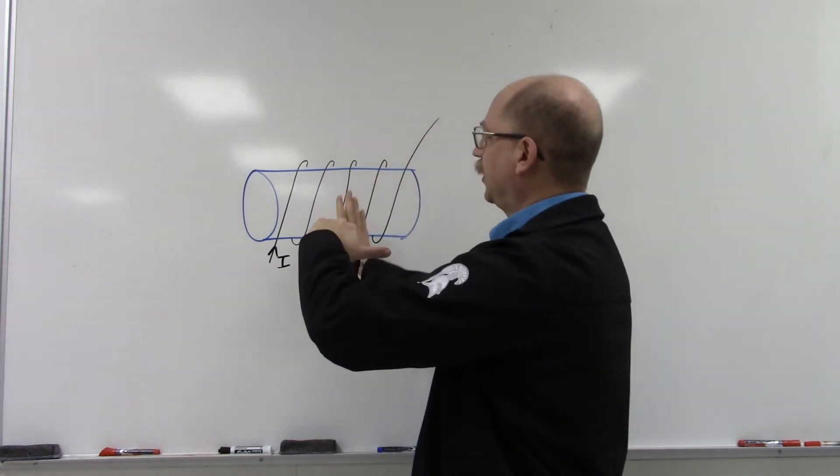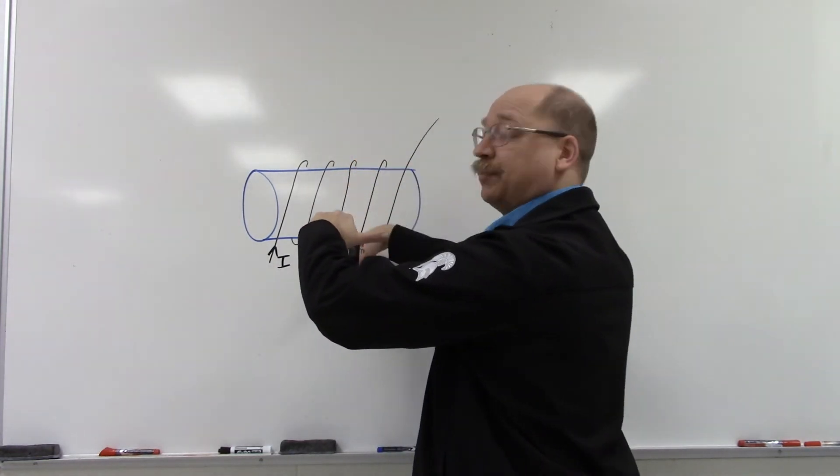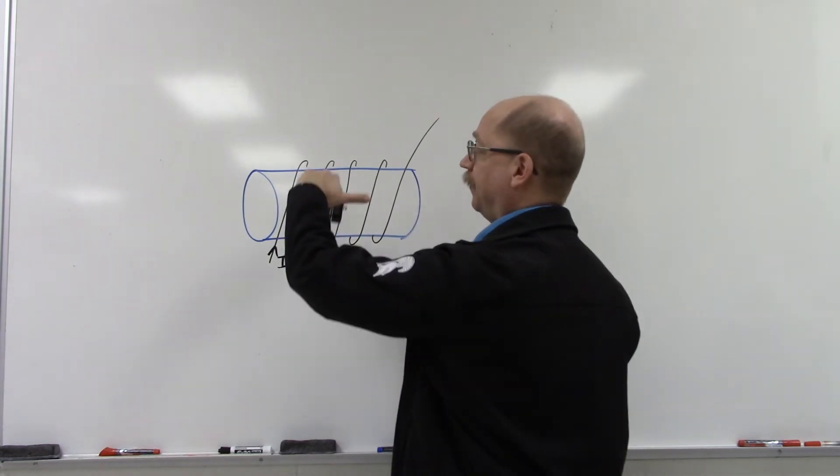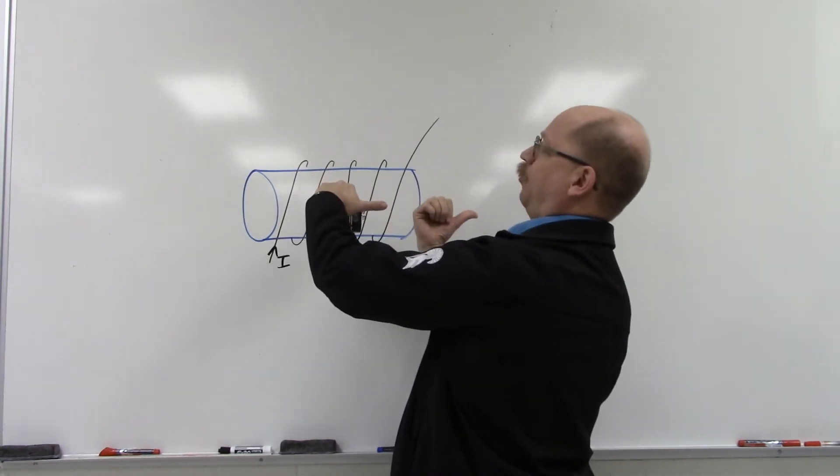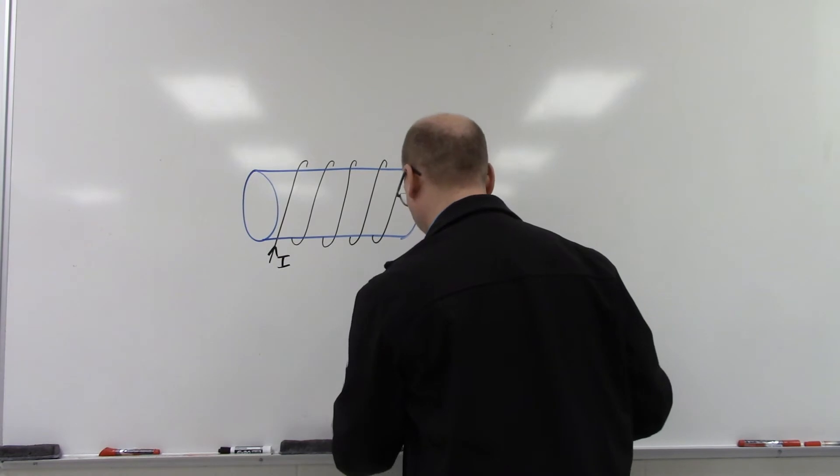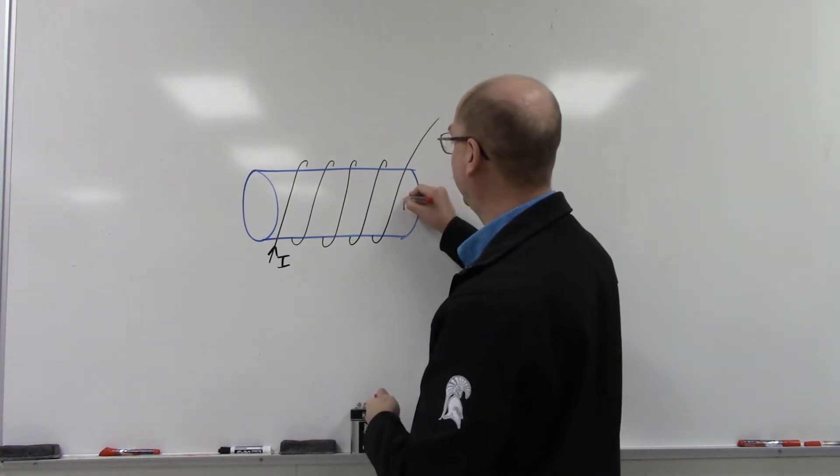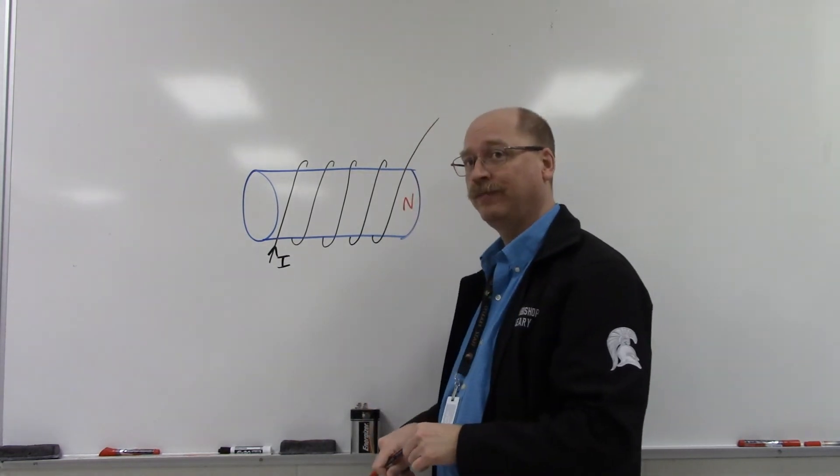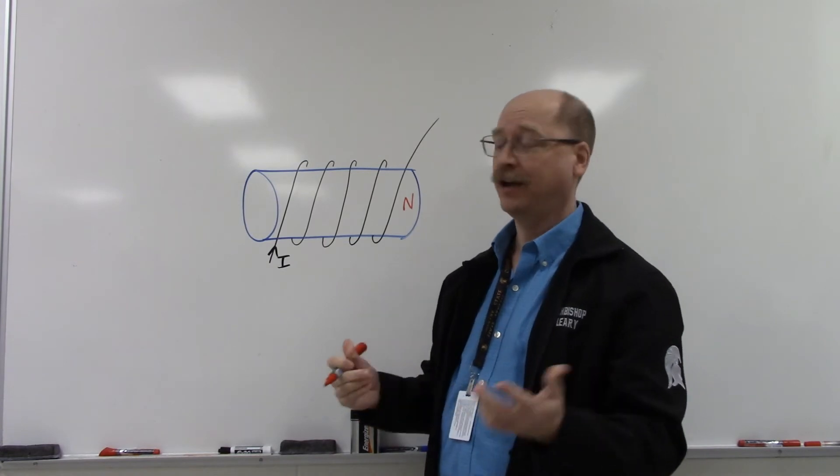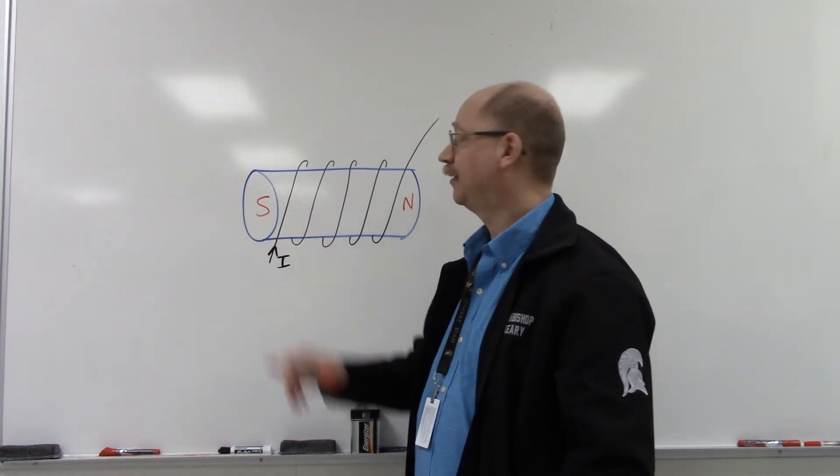That's because if the current is coming up in front, it has to be going down behind. My thumb is pointing that way. That's what means this end will act as north. Now, because magnets are dipolar, that means that end is south.